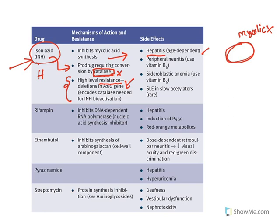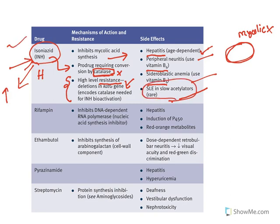Side effects of isoniazid include hepatitis — most anti-TB drugs have this problem since treatment lasts six to eight months, impacting the liver. Isoniazid may also cause peripheral neuritis and sideroblastic anemia, both treated with vitamin B6. It can also cause systemic lupus erythematosus. Isoniazid is metabolized by acetylation: in rapid acetylators the dose must be increased, while slow acetylators are more prone to side effects.